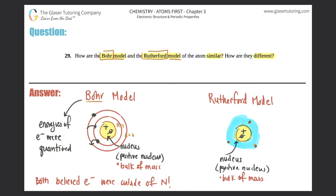So those are the similarities and differences. The similarities: both had a positive nucleus where the bulk of the mass was, and electrons were outside the nucleus. The main difference was that Bohr came up with the idea of shells, that the energies of electrons were quantized — discrete numbers — and that electrons were able to jump between shells. That's the similarities and differences between the Bohr model and the Rutherford model.